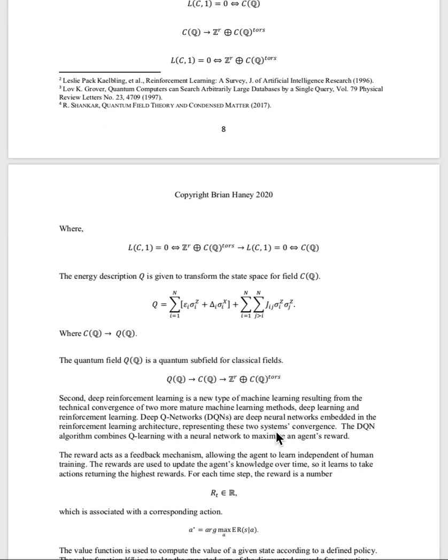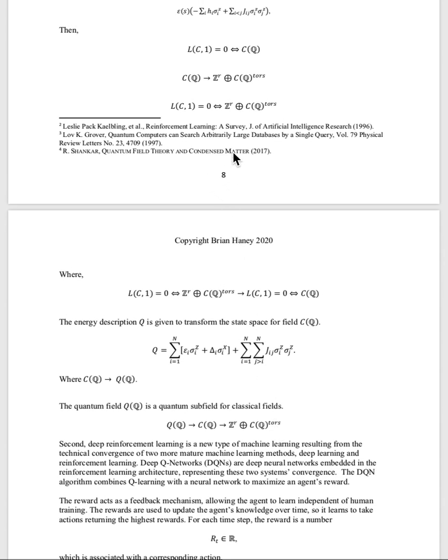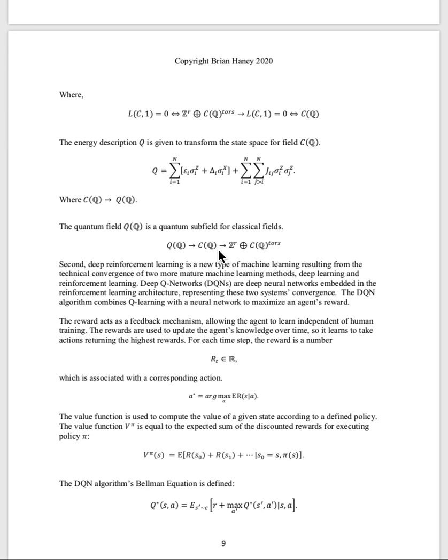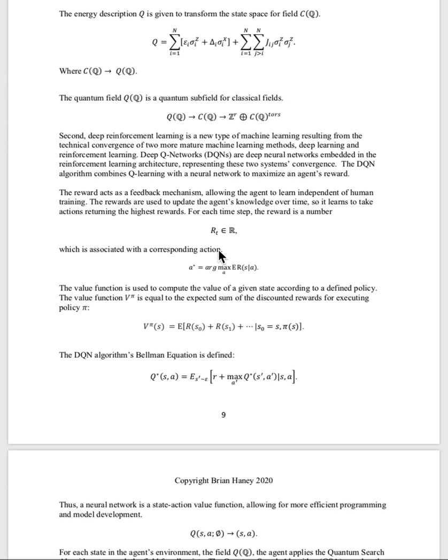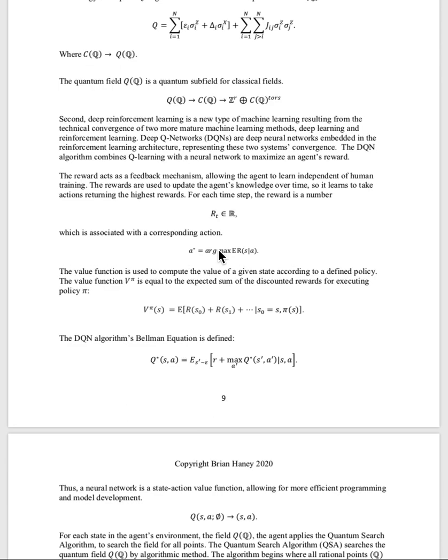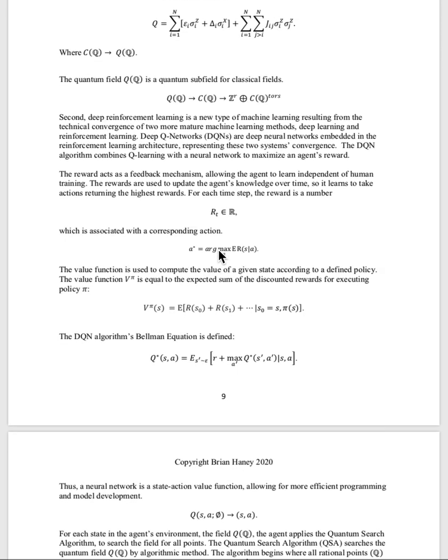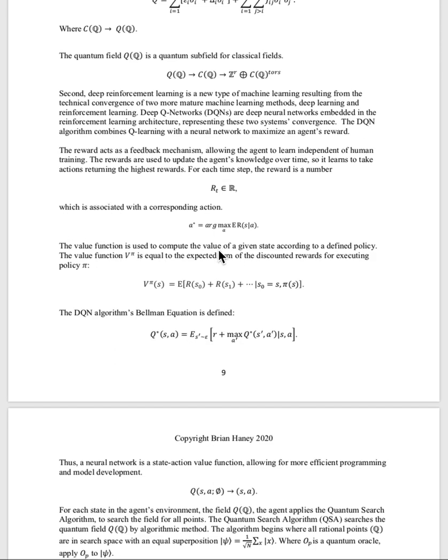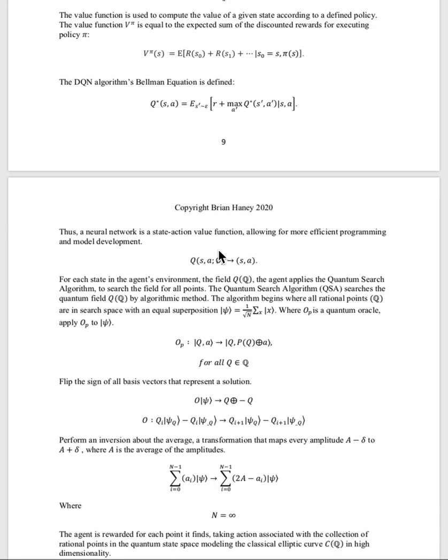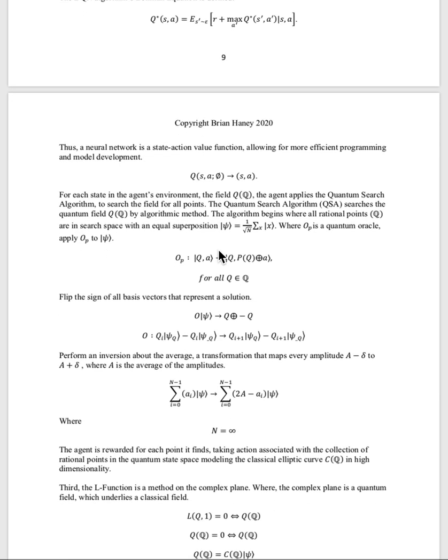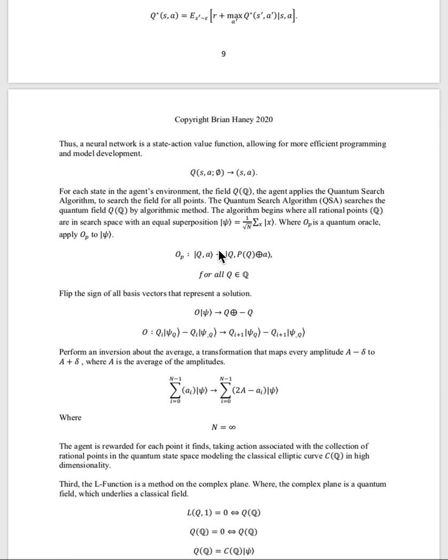Then we use a reinforcement learning algorithm from Leslie Kaelbling's research. We want to embed Grover or a quantum search algorithm in the reinforcement learning architecture using a deep Q network. Here we have our reward description, the action function, value function, the Q network. And here's our quantum search algorithm embedded into the reinforcement learning agent. It's able to search our quantum field for all rational points on the elliptic curve, which is infinite.